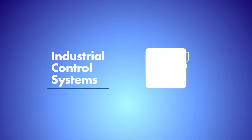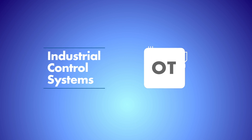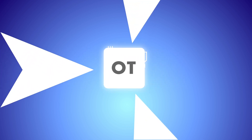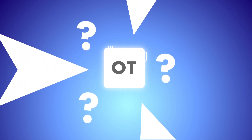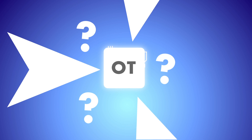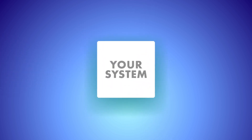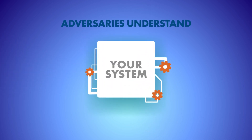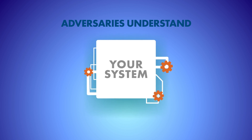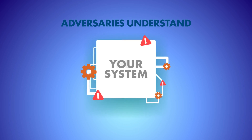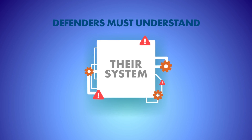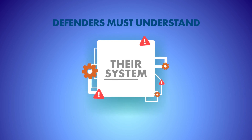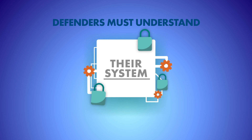Protecting industrial control systems, or operational technology known as OT, is challenged by the lack of a deliberate approach, preventing a complete understanding of the system's characteristics. Adversaries are deliberate in understanding system characteristics at a deep technical level, enabling effective attacks and compromises. Consequently, defenders must understand their critical systems as well as or better than adversaries in order to provide effective and efficient protection.